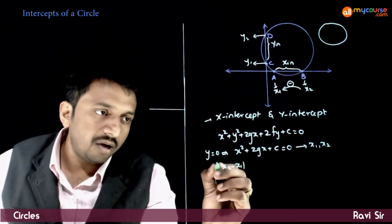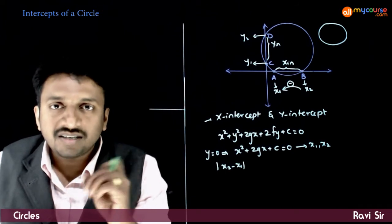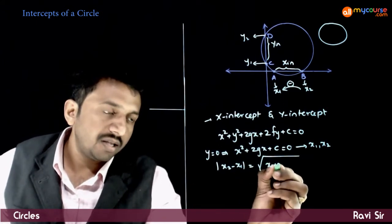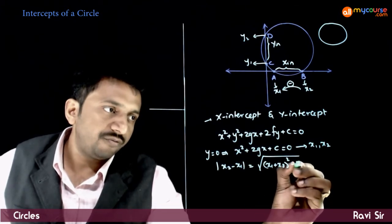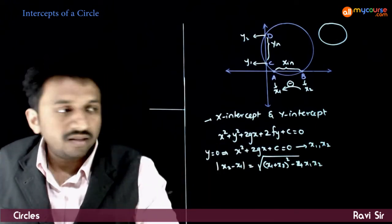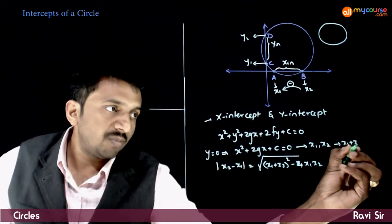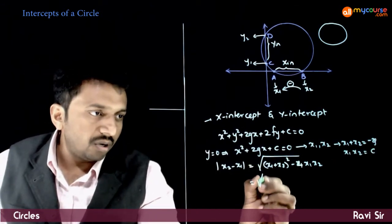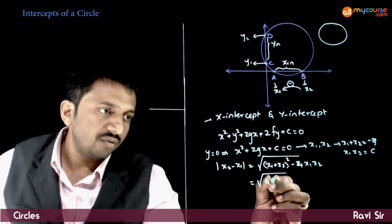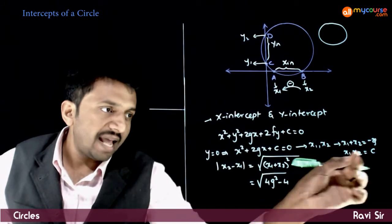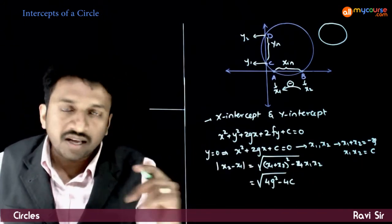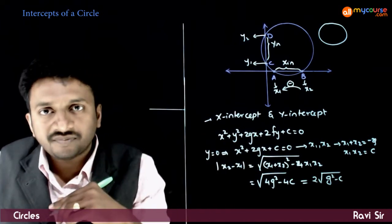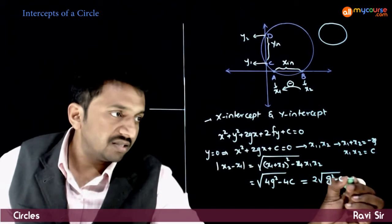To find the magnitude of the difference between the roots, using the formula from quadratic equations: |x2 − x1| = √[(x1 + x2)² − 4x1x2]. The sum of the roots is −2g and the product of the roots is c. So this equals √[4g² − 4c], and taking out the 4 gives 2√(g² − c).